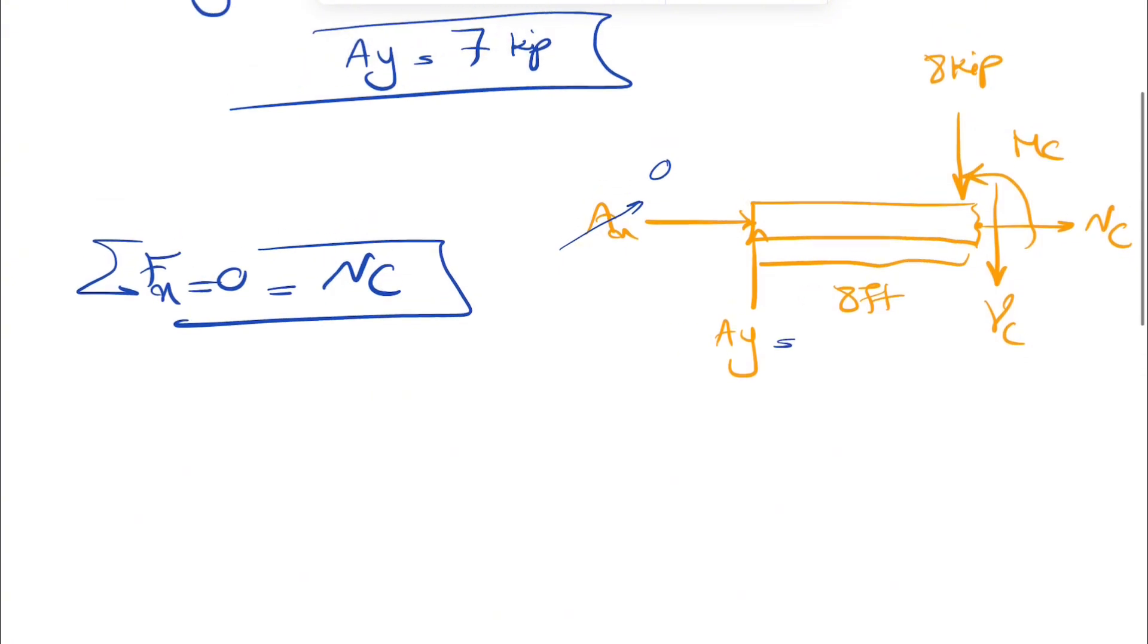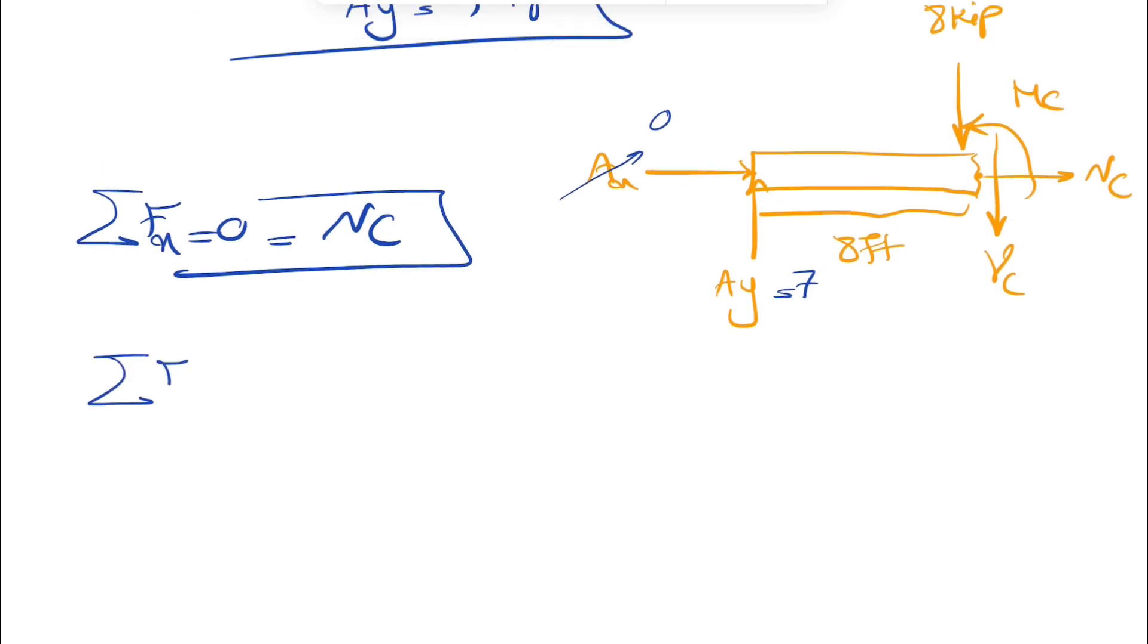We figured that Ay is 7 kip. So we're going to do sum of all forces in y equals 0. We consider Vc downwards. So 7 minus 8 minus Vc equals 0. So our Vc is actually minus 1 kip. Negative sign shows that it's actually upward.